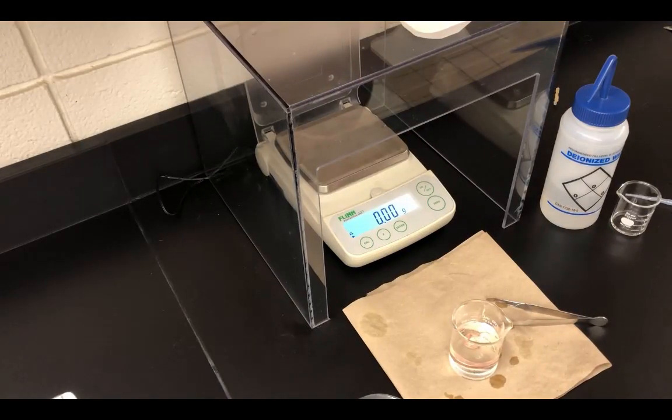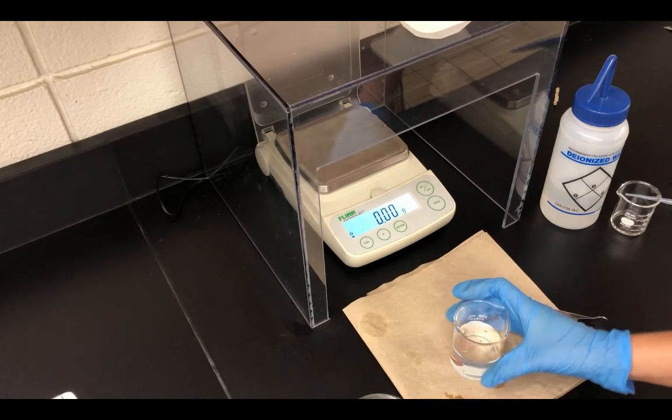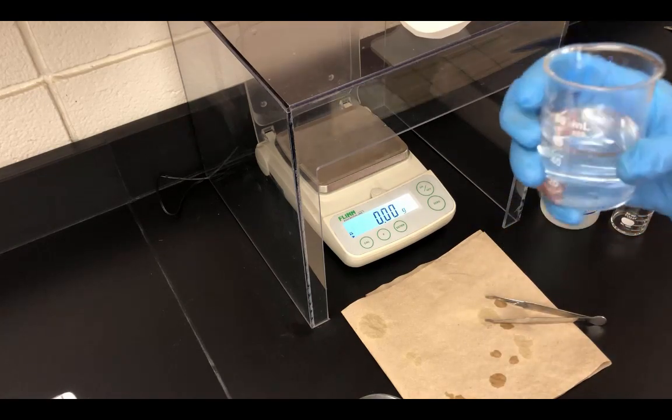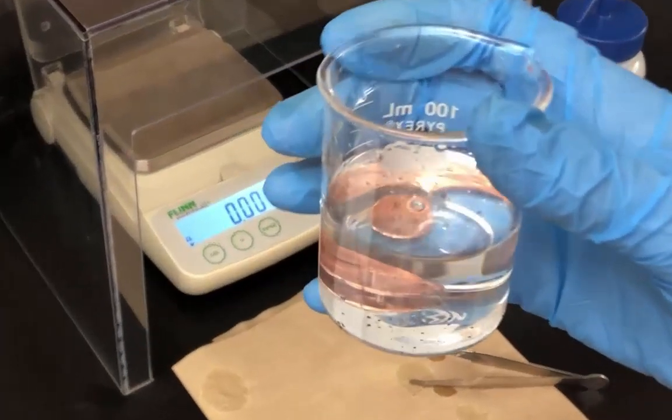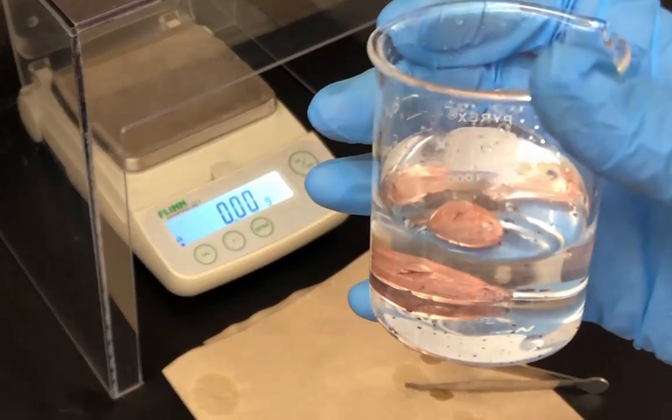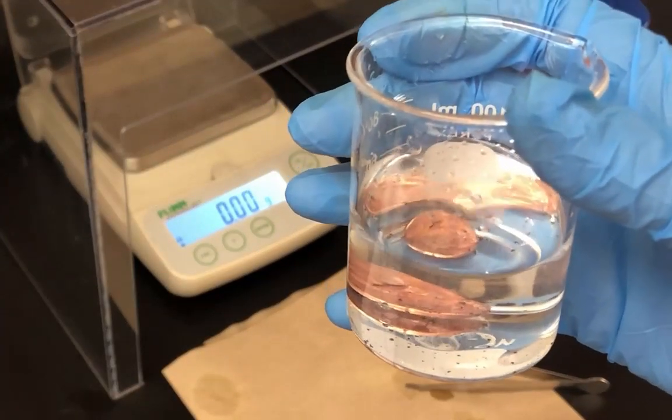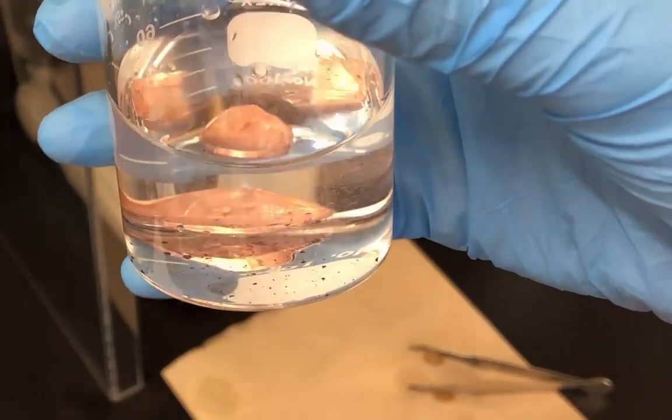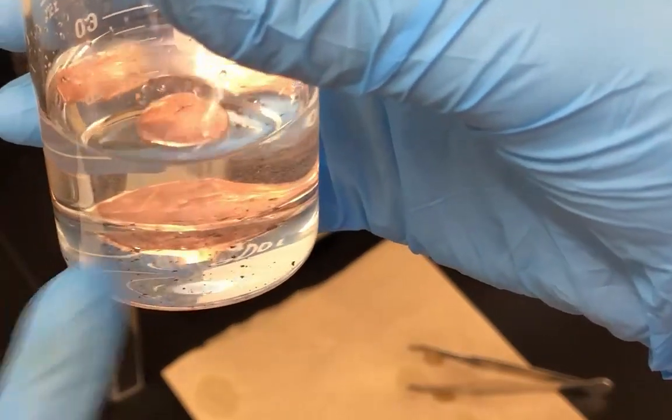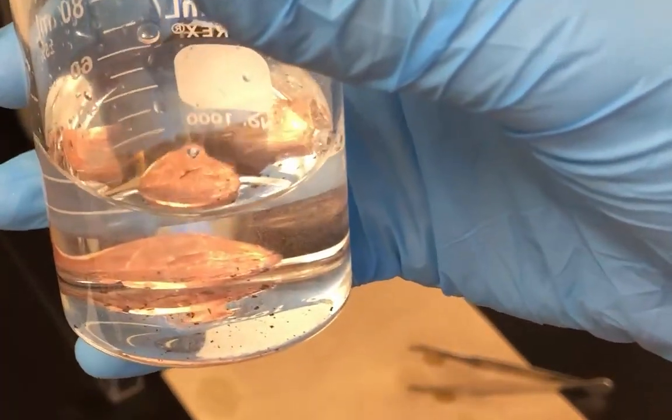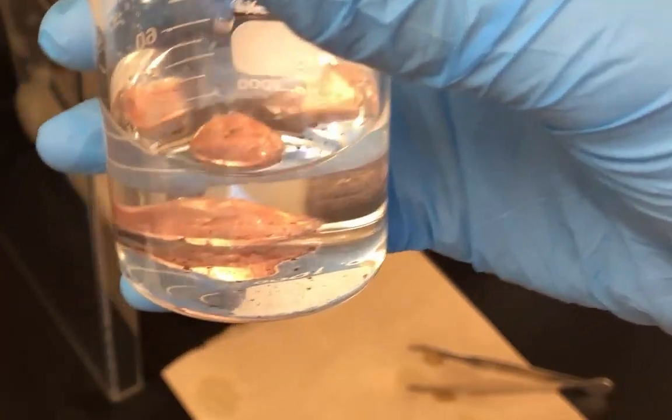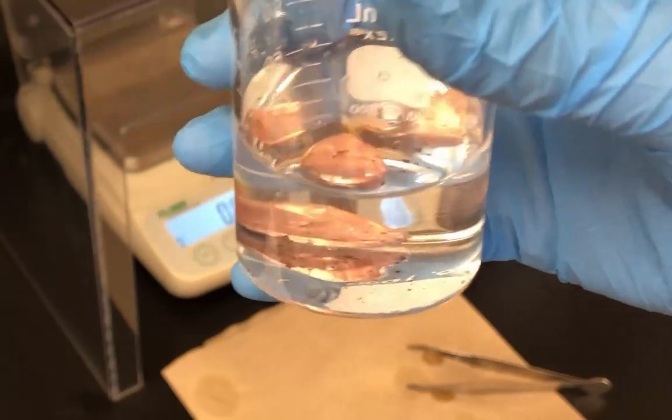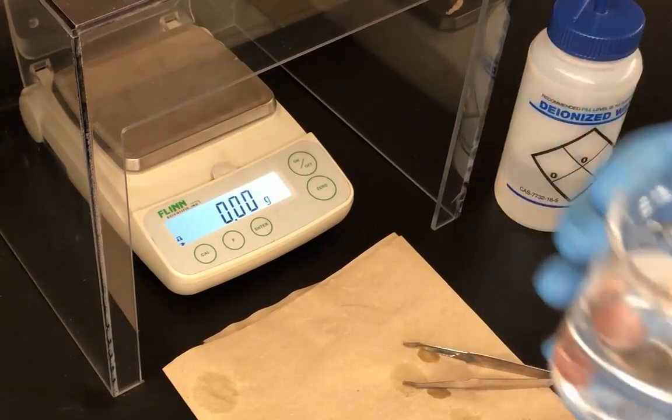Now we'll work through the second part of the percent composition. Make some final observations about the penny in the six molar hydrochloric acid solution. Notice the little brown specks at the bottom and bubbles still forming and coming off the penny. We're going to remove the penny with forceps.